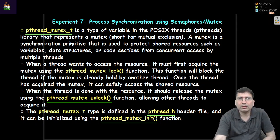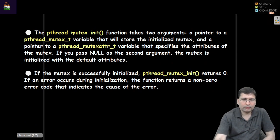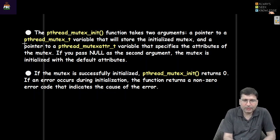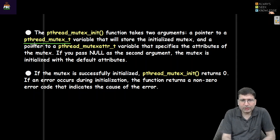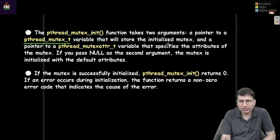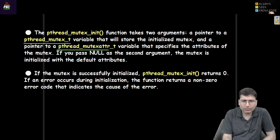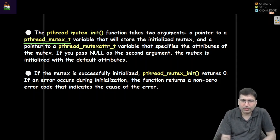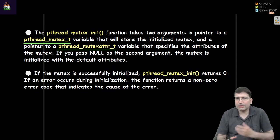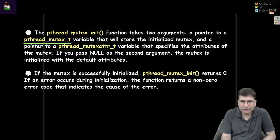Let's talk a bit about the syntax of these functions. In pthread_mutex_init, we need to pass two arguments. The first argument is of type pthread_mutex_t — that means a pointer to the variable, so we pass the address using ampersand. The second argument is a pointer to a pthread_mutexattr_t. In order to set some attributes to the mutex, we can use this. But generally, we pass this second argument as null.